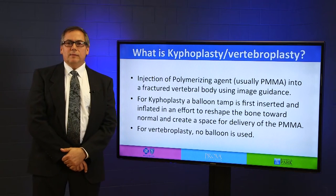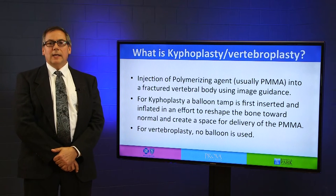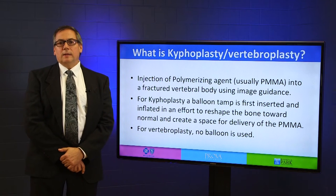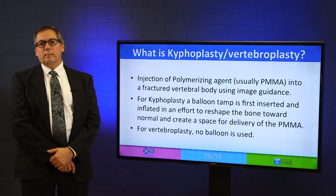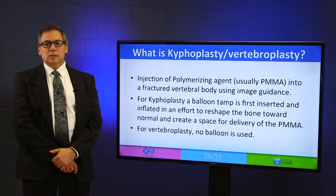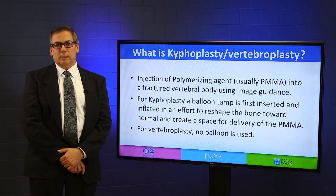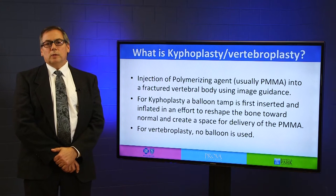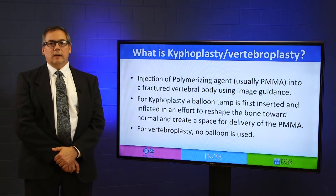So what exactly is kyphoplasty and vertebroplasty? It involves injecting a polymerizing agent into a fractured vertebral body using image guidance. The most commonly used agent is polymethylmethacrylate, or PMMA. For kyphoplasty, a balloon tamp is first inserted into the vertebral body and inflated in an effort to reshape the vertebral body and create a shape of bone more toward normal appearance, and also create a space for the delivery of the PMMA.